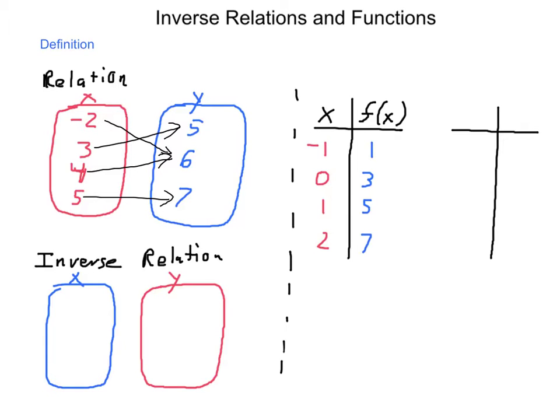Now in order to make an inverse of this relationship, we're going to take our former domain values, the 5, 6, and 7, and those now become our range values. And then our former range values, negative 2, 3, 4, and 5, become our new domain. We're going to map these back. Before we went from 3 to 5, now we're going to go from 5 to 3. We went from negative 2 to 6, so I'll go from 6 to negative 2. We also went from 4 to 6, and we'll go from 6 to 4. I went from 5 to 7, so now I'll go from 7 to 5.